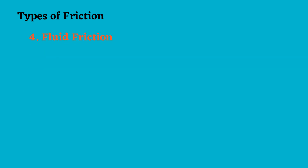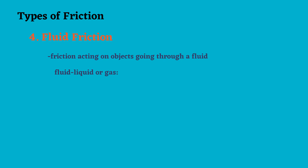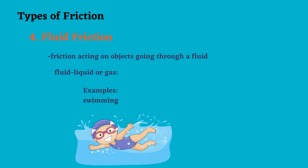The fourth type of friction is what we call fluid friction — the friction acting on objects going through a fluid. When we say fluid, we are referring to liquid or gas, or water or air. Examples include swimming and flying a kite. Any object moving through the air or through water has what we call fluid friction.